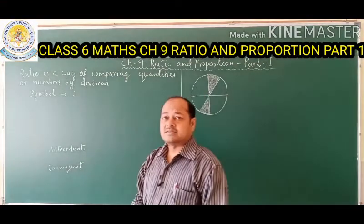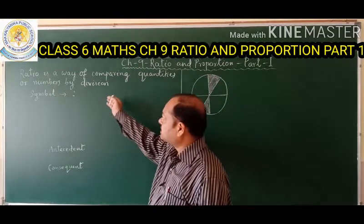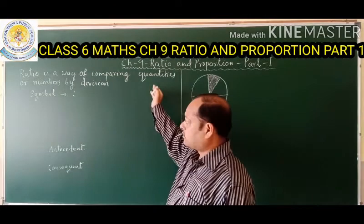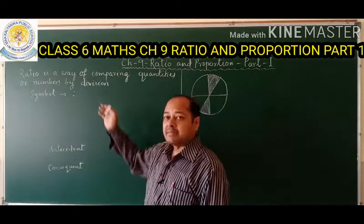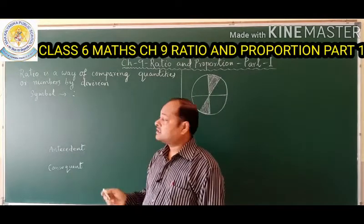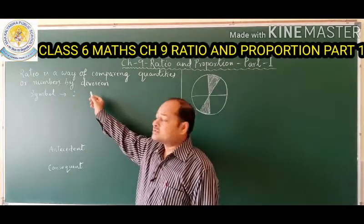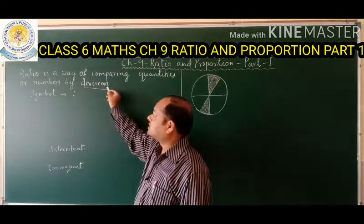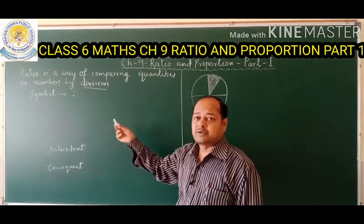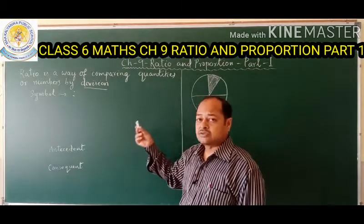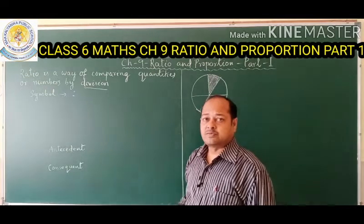The definition of ratio states that ratio is a way of comparing quantities or numbers by division. So the operation used here is division, and we have to compare two quantities. Let's say we compare the ages of two persons.